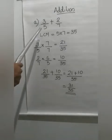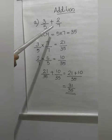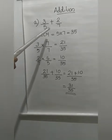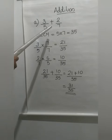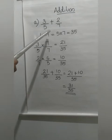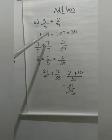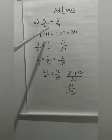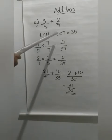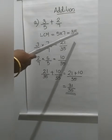Next example: 3 by 5 plus 2 by 7. By looking at the denominators, we can see this is not a like fraction — this is an unlike fraction. So the first step is we have to convert this fraction into a like fraction. We have already discussed how to convert by finding the LCM. Here, 5 and 7 are prime numbers, so we can directly multiply. What is 5 into 7? 35. So the LCM is 35.